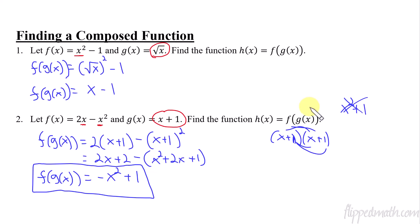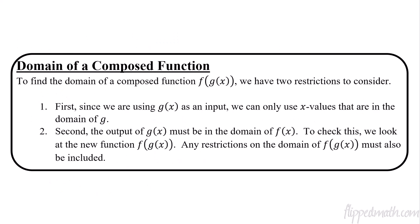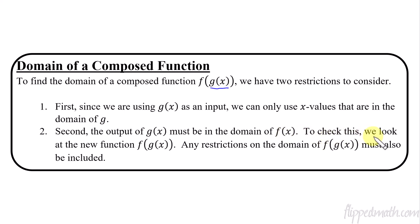That's just composing the functions, having your new rule set up. But what about the domain of these things? That's a little bit trickier. When we find the domain of a composed function, there are two restrictions to consider for f of g of x. First, since g of x is the input being plugged into f, we can only use x values that are in the domain of g. Secondly, the output of g must be in the domain of f. To check this, we look at the new function we create and any restrictions on its domain — we have to include those restrictions as well.